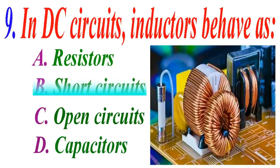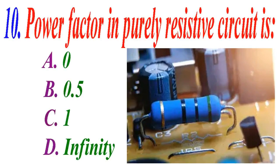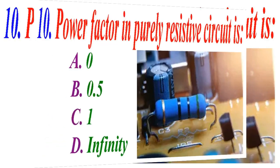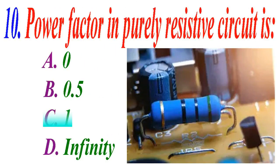Power factor in a purely resistive circuit is: A 0, B 0.5, C 1, D infinity. The correct answer is C, 1.